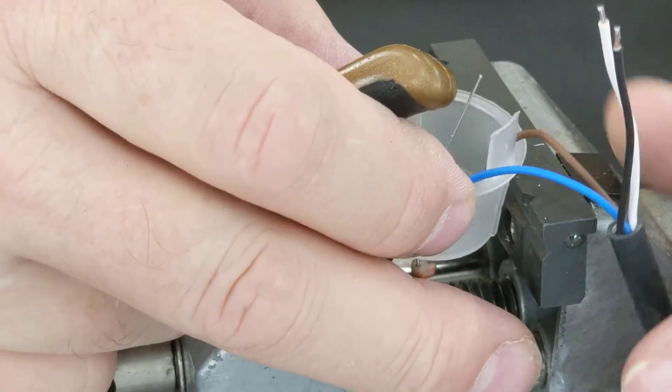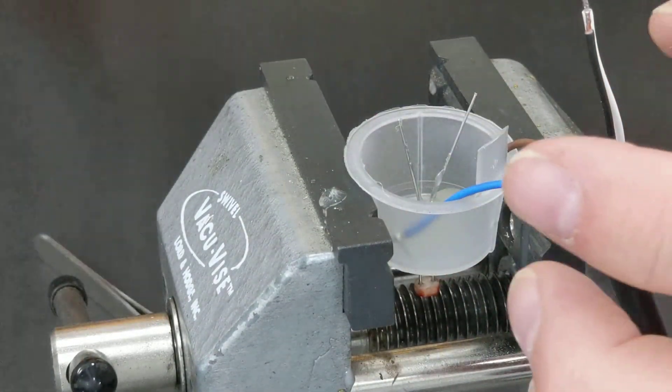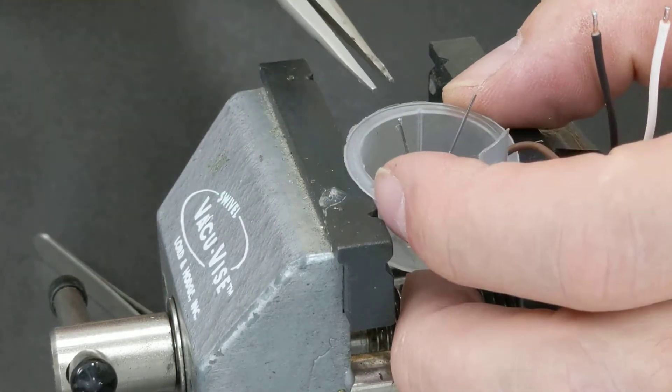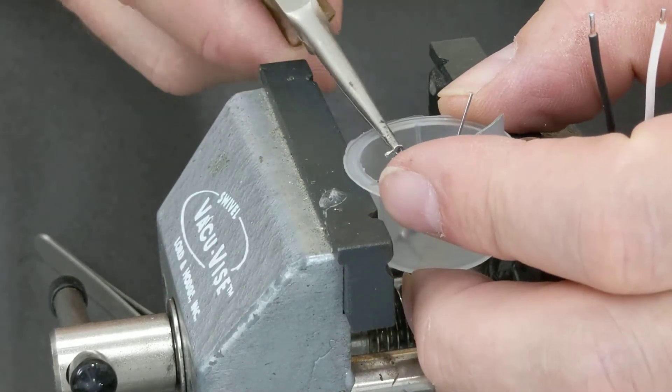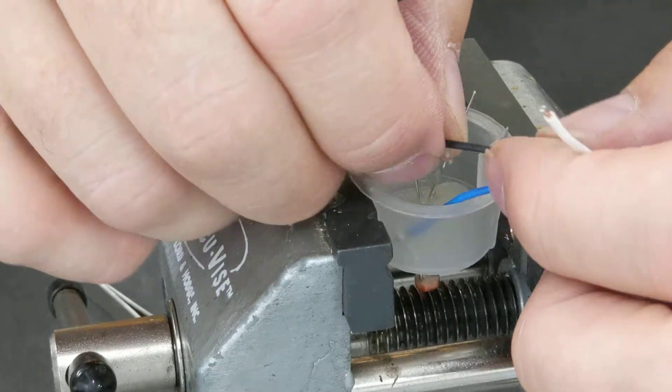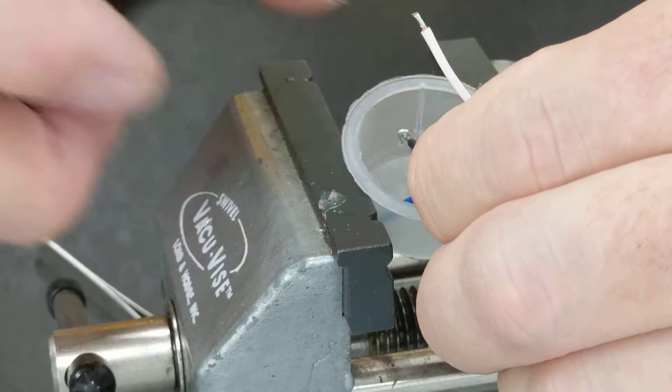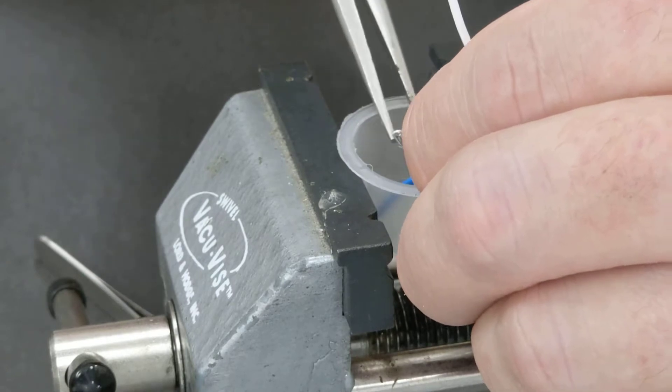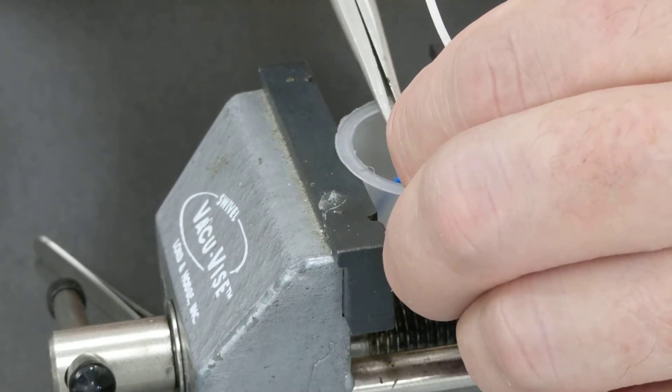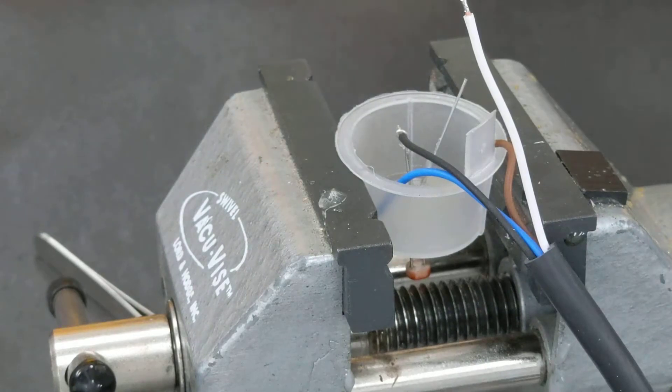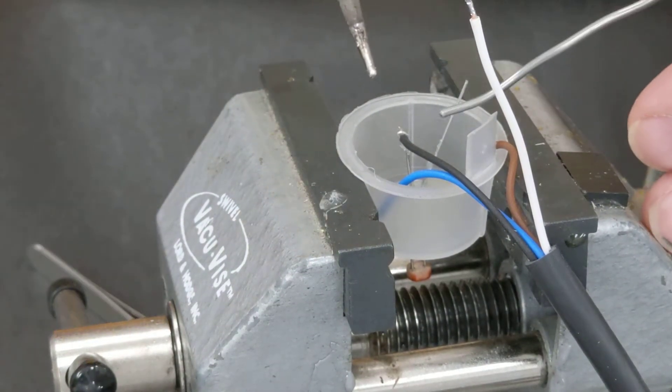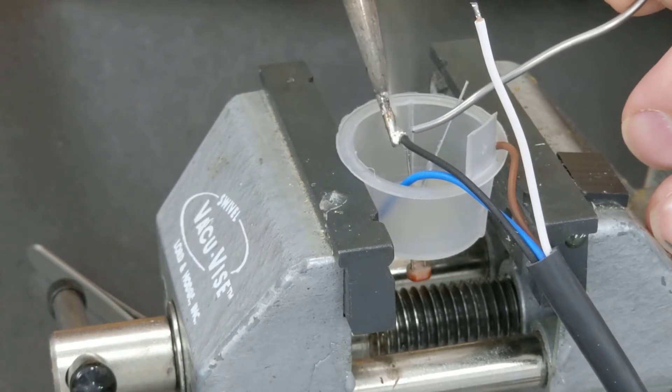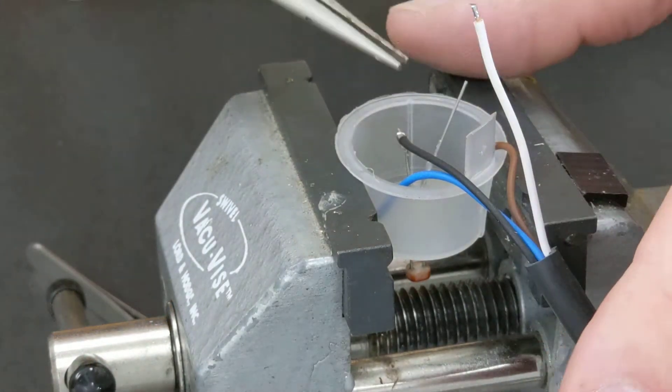When I get done I'm going to pot this whole thing with glue to hold everything in place. My color code is the long lead is white, short lead is black. I'll start with the black one for the short lead, make a little bend in the wire and mechanically crimp it.